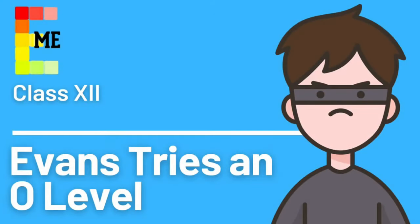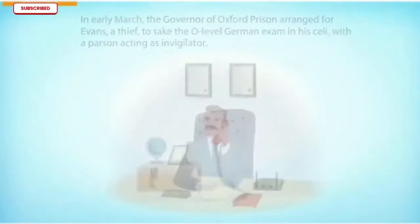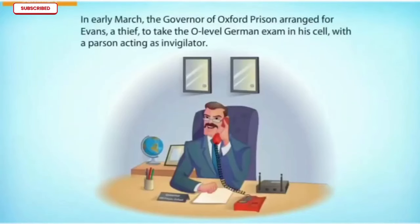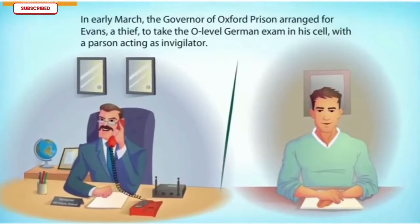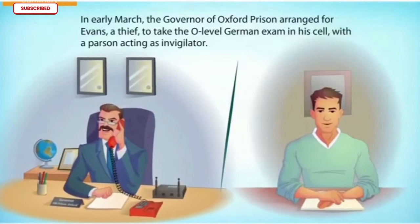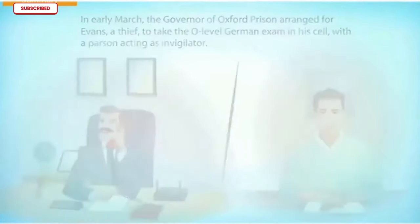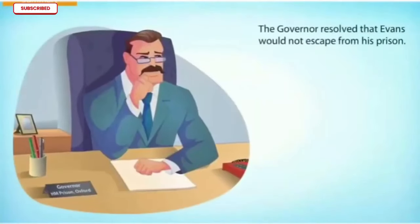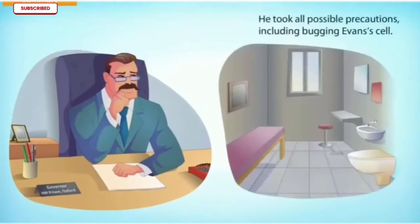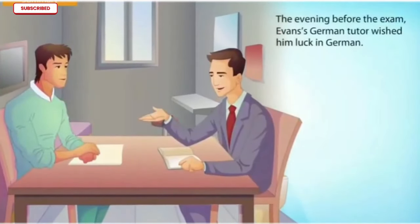Today I am here with the chapter 'Evans Tries an O-Level.' In early March, the governor of Oxford prison arranged for Evans — a thief — to take the O-level German exam in his cell with a person acting as invigilator. Evans had escaped thrice from prison in the past. The governor resolved that Evans would not escape from his prison. He took all possible precautions, including bugging Evans's cell. The evening before the exam, Evans's German tutor wished him luck in German — and it was evident that Evans knew no German at all.